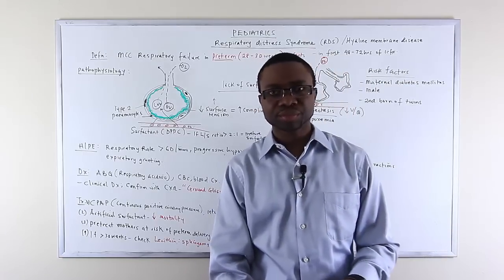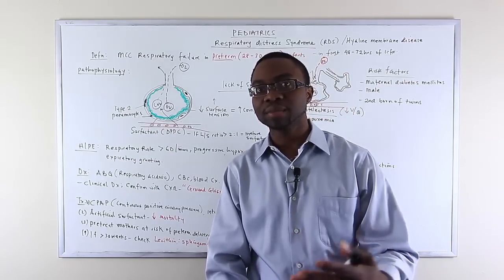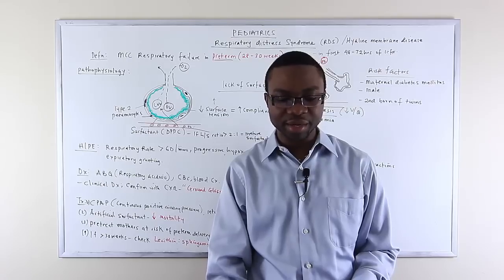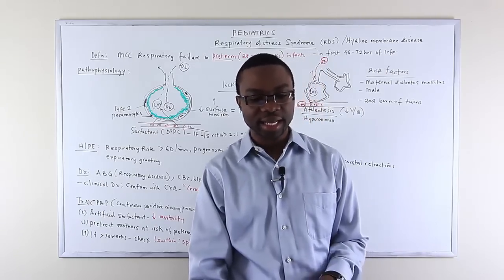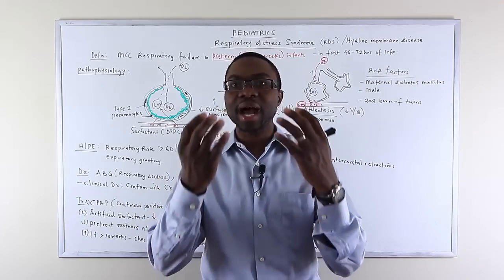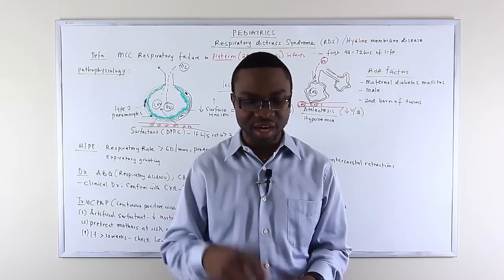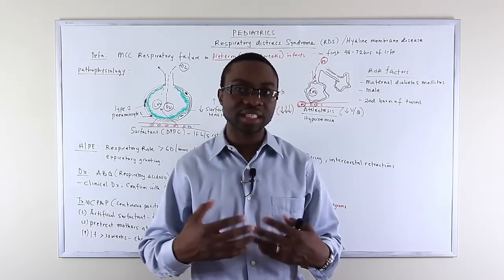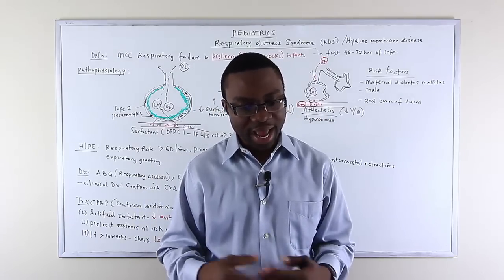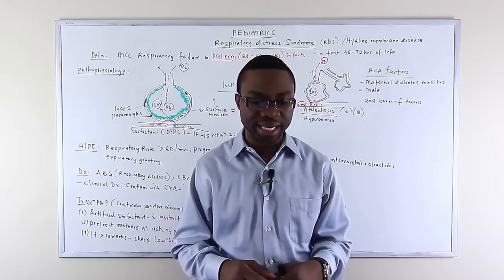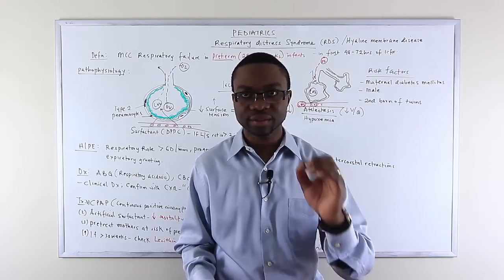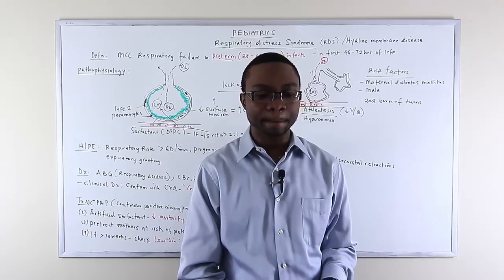We need to talk about some other syndromes that can present with tachypnea in a newborn. One of them is known as transient tachypnea of the newborn, TTN. This happens in neonates that have retained amniotic fluid inside their lungs. Usually this results in prominent perihilar streaking in the interlobular fissures. But in transient tachypnea, you just give oxygen. You give them oxygen, they get better.